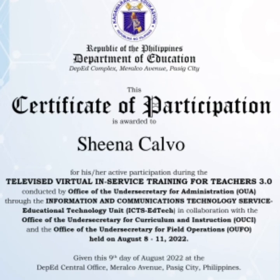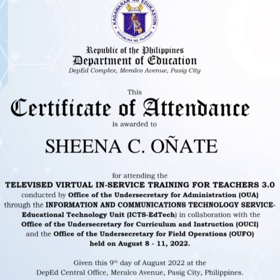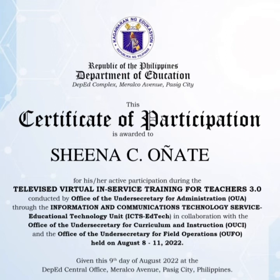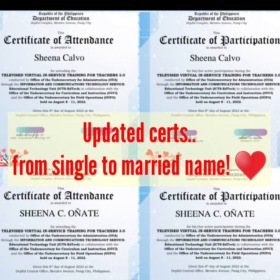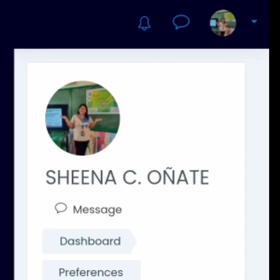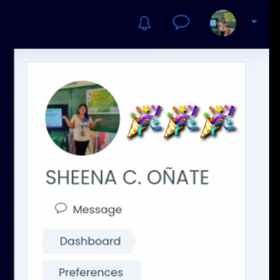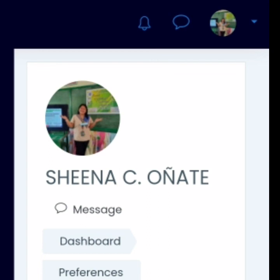So yes, I was showing as Sheena Calvo — my single name. But now, here are my updated certificates wherein I already have my husband's surname. I am now Sheena C. Onyate. So to end today's video, I think it's mission accomplished — we're done updating my name from single to married status. At the same time, I now have my profile picture in my LMS account. I hope that I've helped you, kahit pa pano, mga ma'ams and sirs.